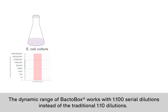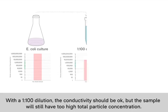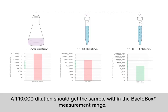The dynamic range of the BactoBox can handle jumps in steps of 1 to 100 dilutions instead of the 1 to 10 dilutions that we traditionally use in microbiology. Now if we do a 1 to 100 dilution, the conductivity should be okay but the sample will still have too high total particle concentration. Instead, a 1 to 10,000 dilution should get the sample within the BactoBox measurement range.